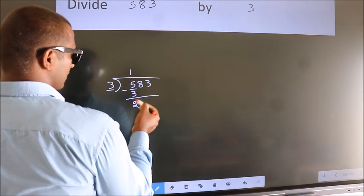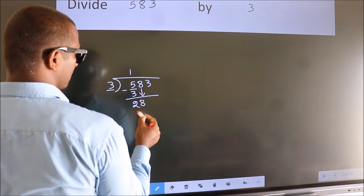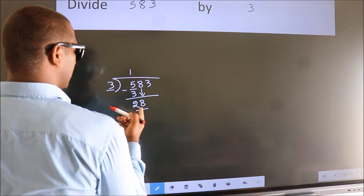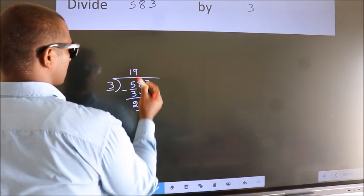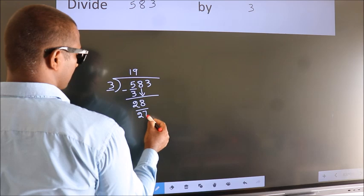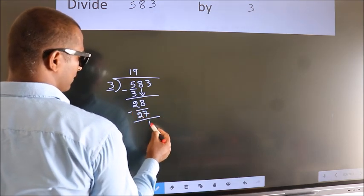After this, bring down the next number, so 8 down, giving us 28. A number close to 28 in the 3 table is 3 nines, 27. Now we subtract, we get 1.